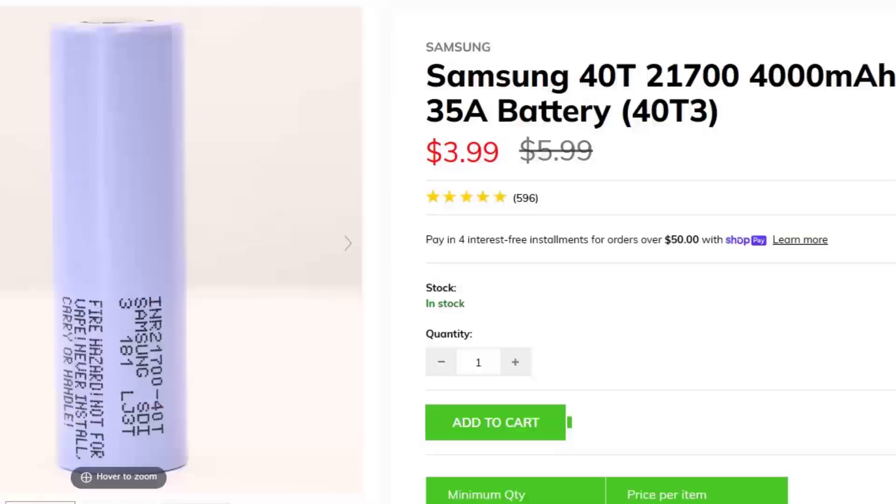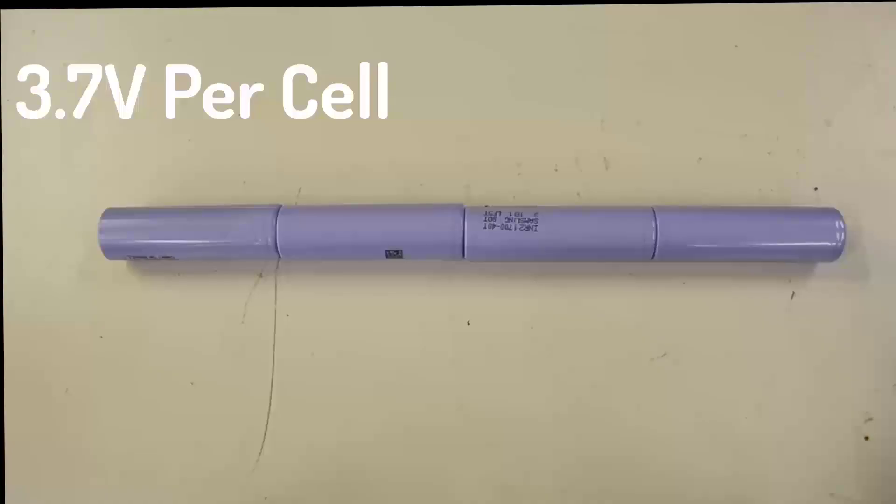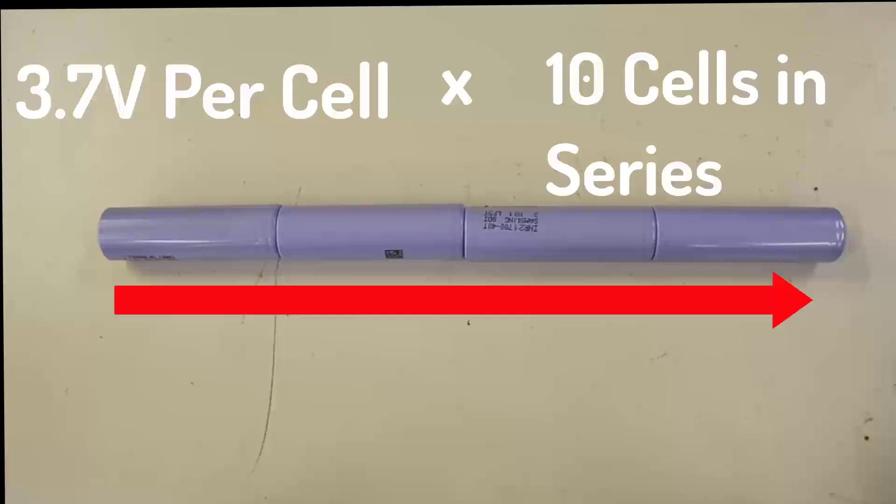These are the cells that we're going to be using for this build: Samsung 40T 21700 cells with a capacity of 4,000 milliamp hours, discharge of 35 amps continuous. We're going to have to run them in series. We're going to need 10 cells in order to get our 36 volts. You can do the same calculation to get 48 volts, or even 52, 60, and 72 volts. It's 3.7 volts times the amount of cells that you have in series.